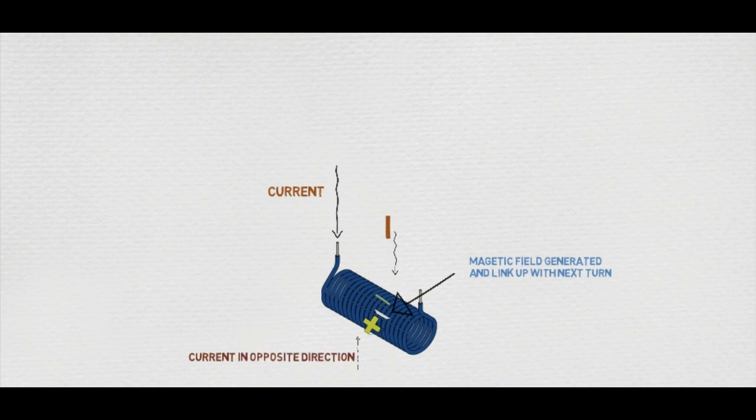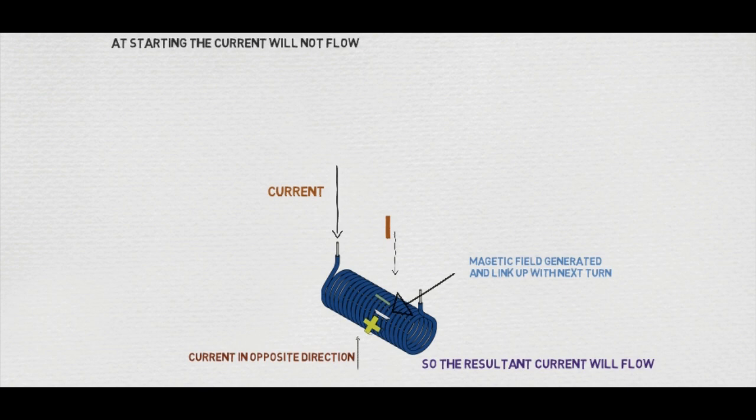As two currents can flow through the coil, a resultant will flow through the coil. Whenever we try to flow current through the coil at starting, the current will not flow through the coil immediately because the coil will react. We understand that EMF is generated and a current is developed that opposes the flow of current.